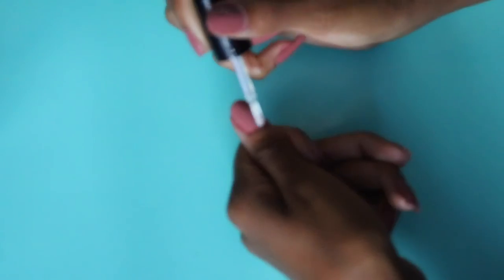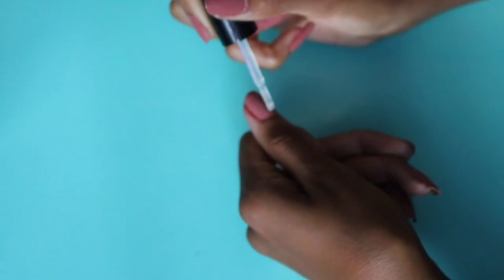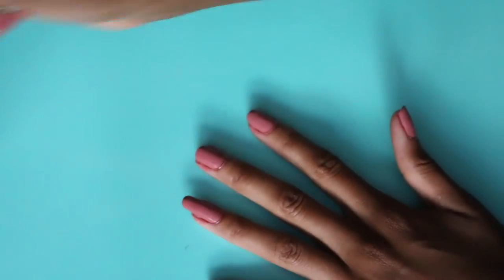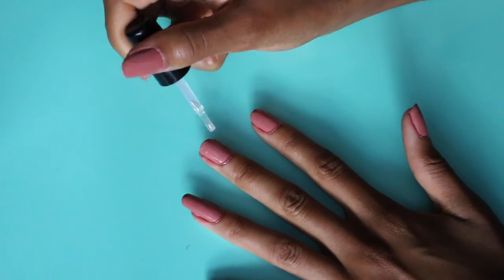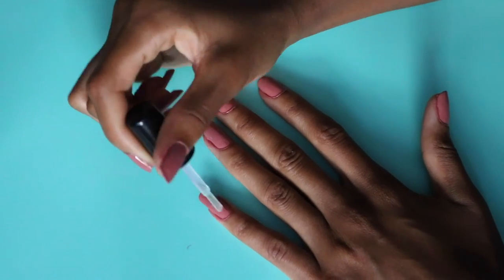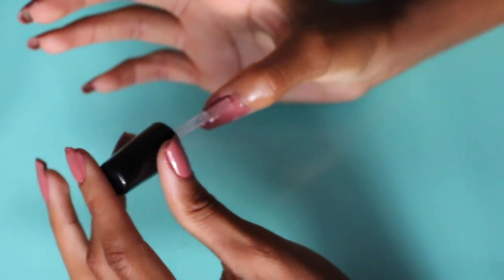Here's my top coat. I also use the Butter London top coat but like I said, this was long ago. But I use this Sally Hansen Strengthening Top Coat on top of that. I am all about just layering up my nails. I need as much protection on them as I can get because I don't want them to break.